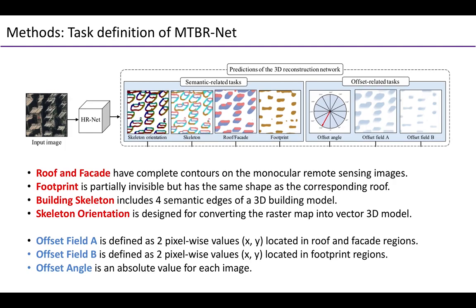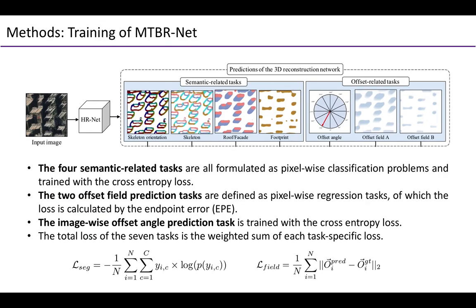For the offset-related tasks, offset field A and B are defined as two pixel-wise values located in the roof and facade regions and the footprint regions, respectively. Offset angle is an absolute value for each image. The four semantic-related tasks are all formulated as pixel-wise classification problems and trained with the cross-entropy loss. For the two pixel-wise offset field regression tasks, the loss is calculated by the endpoint error. The image-wise offset angle prediction task is trained with the cross-entropy loss.